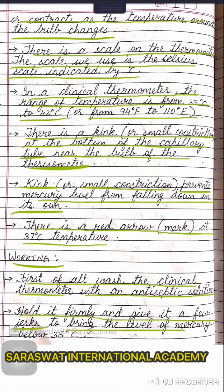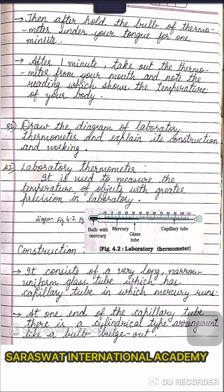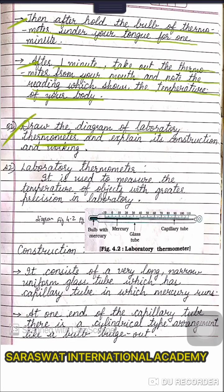Working: first of all, wash the clinical thermometer with an antiseptic solution. Hold it firmly and give it a few jerks to bring the level of mercury below 35°C. Then hold the bulb of the thermometer under your tongue for one minute. After one minute, take out the thermometer from your mouth and note the reading, which shows the temperature of your body.